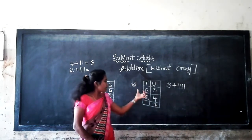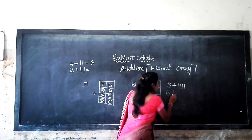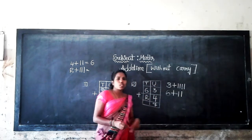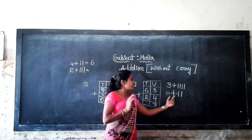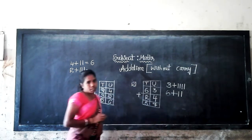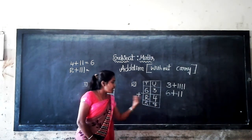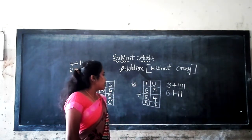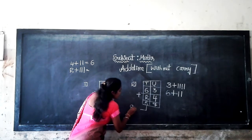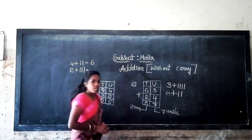The tens place numbers are 6 and 2. We will count from 6 — after 6 is 7, after 7 is 8. So 6 plus 2 is equal to 8. We get the answer 87. The sum of 63 and 24 is 87. In 87 there are 8 tens and 7 units, isn't it? Yes.